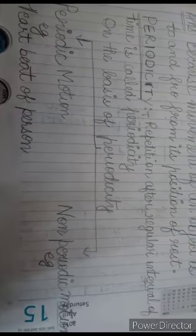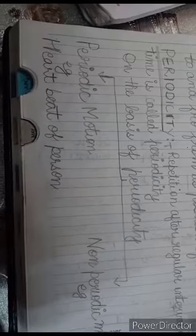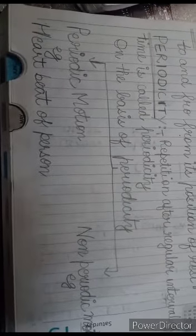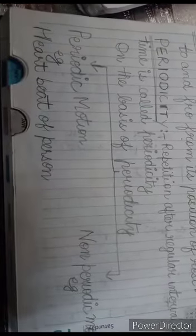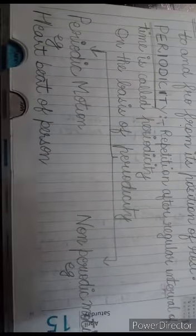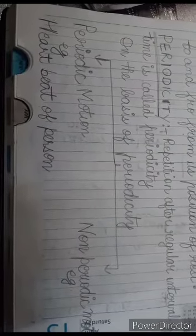On the basis of this periodicity, motion is divided into two parts: periodic motion and non-periodic motion. What do you mean by periodic motion? If an object repeats its motion in regular intervals of time, then it is known as periodic motion. For example, pulse rate of an average human being is periodic. Heartbeat of an average person is also periodic.